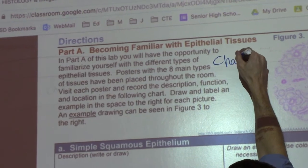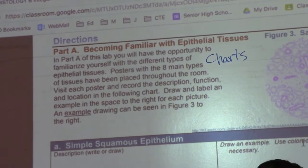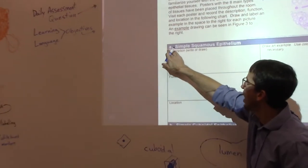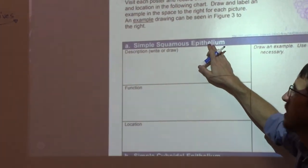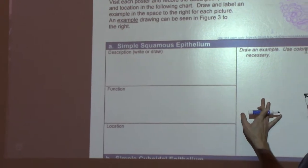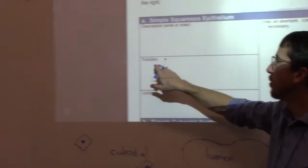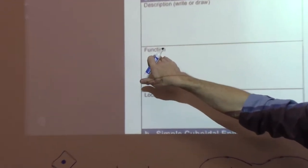There's a document on Google Classroom that says charts instead of posters. So, go to epithelial charts, epithelial tissue charts, and then you'll see A, simple squamous epithelium. And it's organized like this, but without the lines. So, we're putting it, organizing it into this table. Now, remember what I said about function. We just want the verb, right?